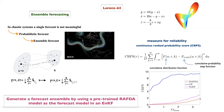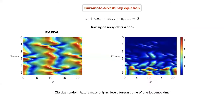For an infinite-dimensional system — the Kuramoto-Sivashinsky equation — training on noisy observations, classical random feature maps produce at most about one Lyapunov time of forecast. RAFTER, without much tuning of internal parameters, achieves roughly three to four Lyapunov times, as shown by the forecast error curve.